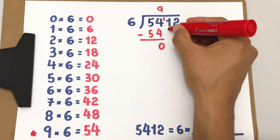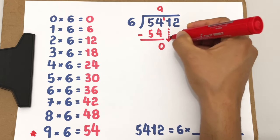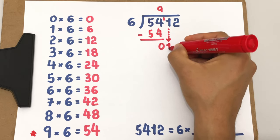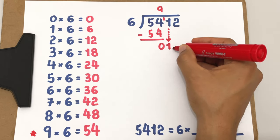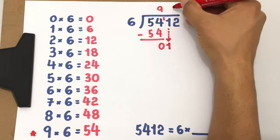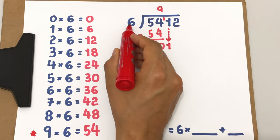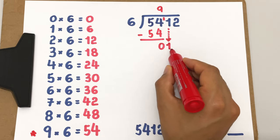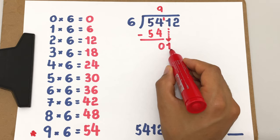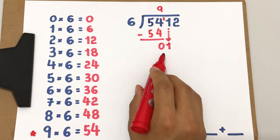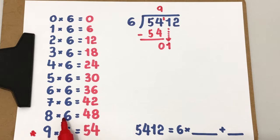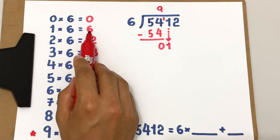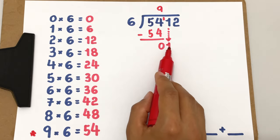After a subtraction, I bring down the next digit, which is this one now here. Whenever I bring down a digit, I have to ask the question. What number do I multiply by 6 to get almost 1 or 1 but not more than 1? Taking a look at the multiplication table that we have here, 1 times 6 is 6, which is more than 1.